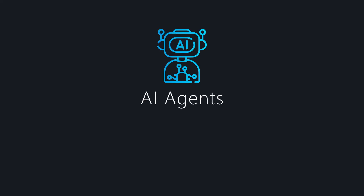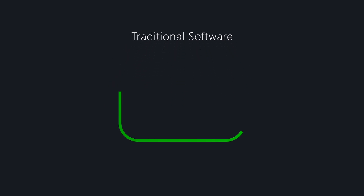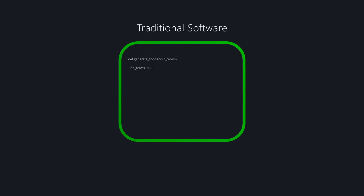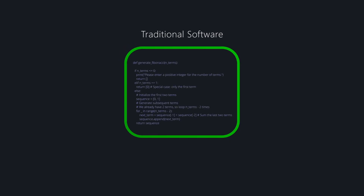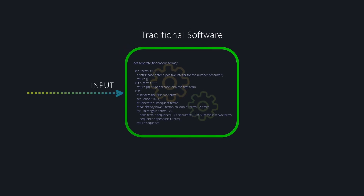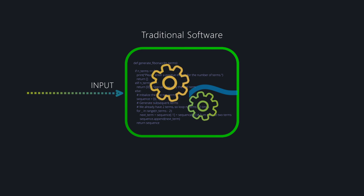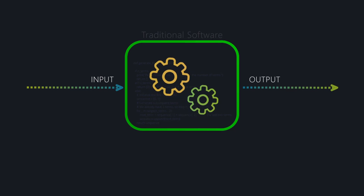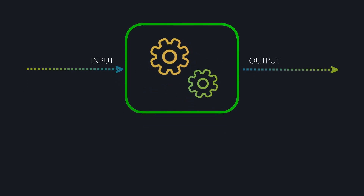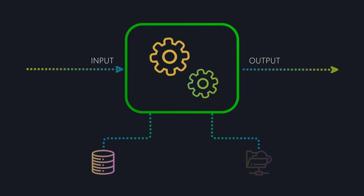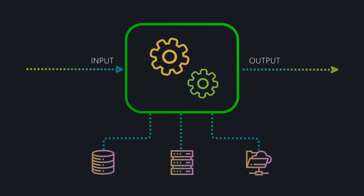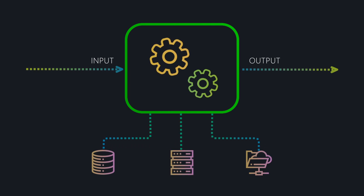To understand AI agents, let's first look at how they differ from traditional software. Traditional software is built using programming languages and follows a fixed set of instructions. It takes an input, processes it in the same way every time, and produces a predictable output. It can interact with external systems like databases, file systems, or APIs, but always in a deterministic, predefined way.